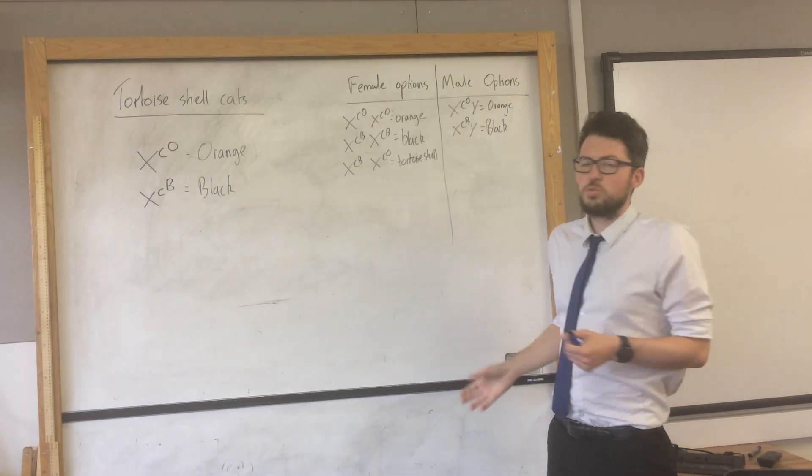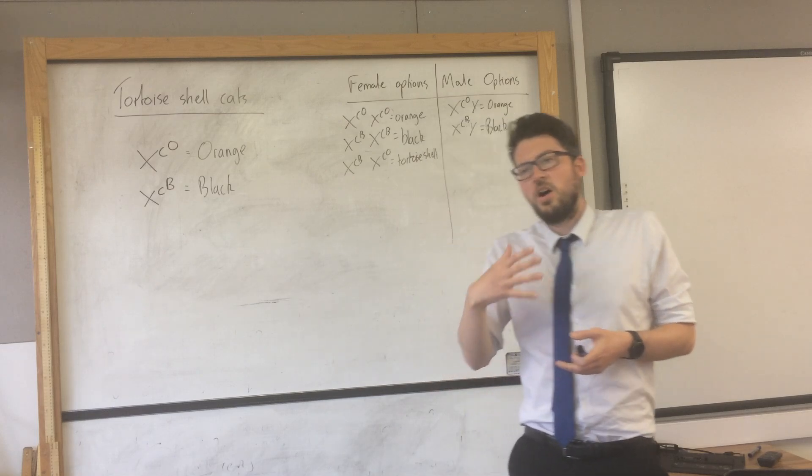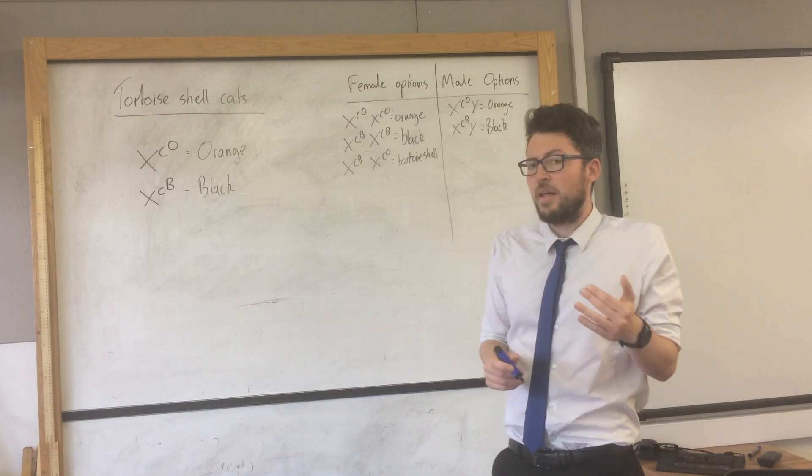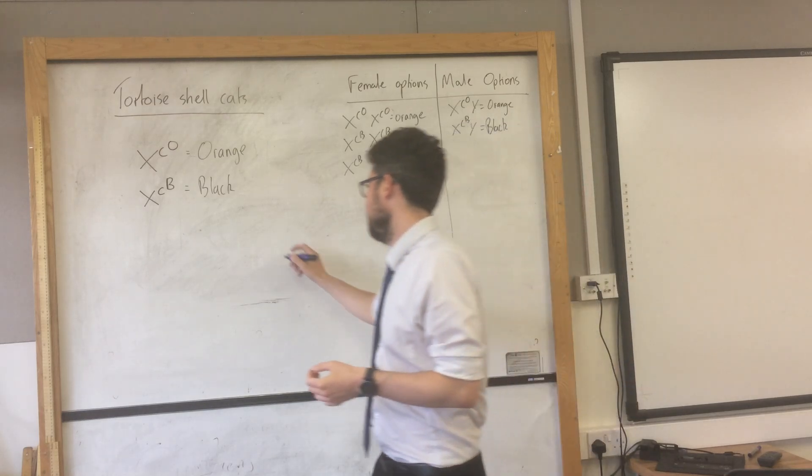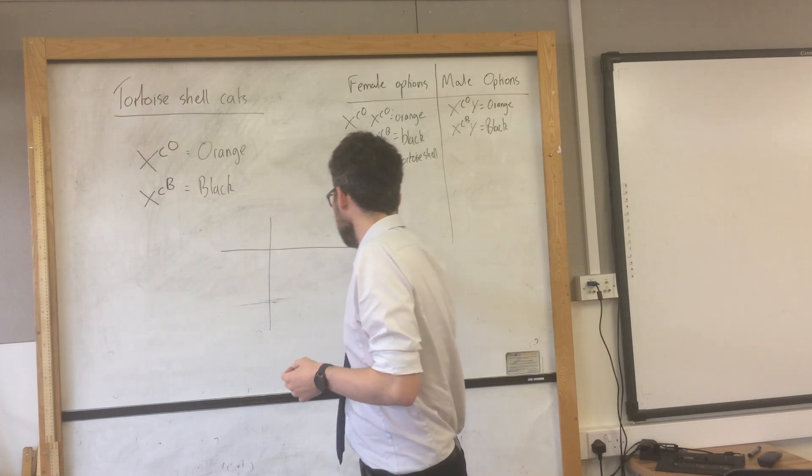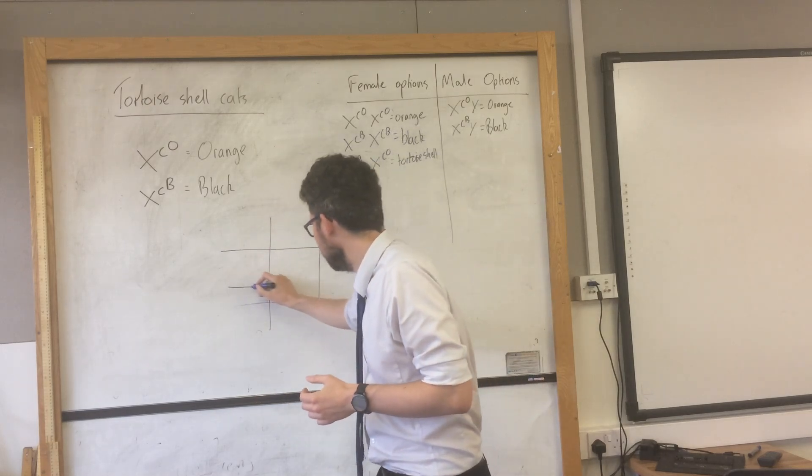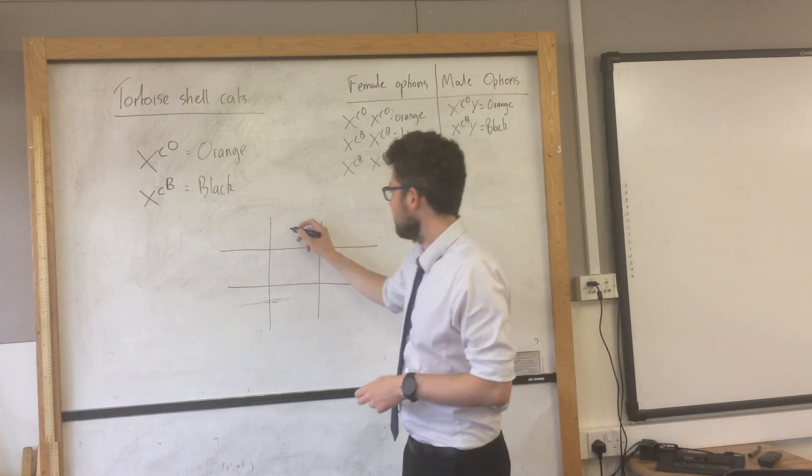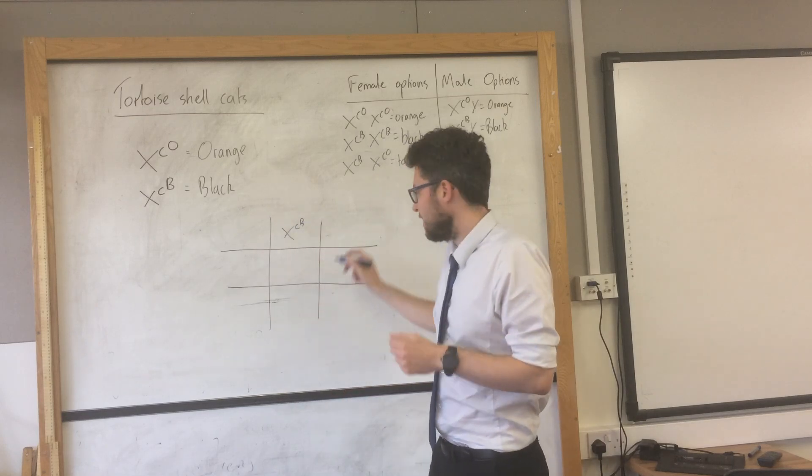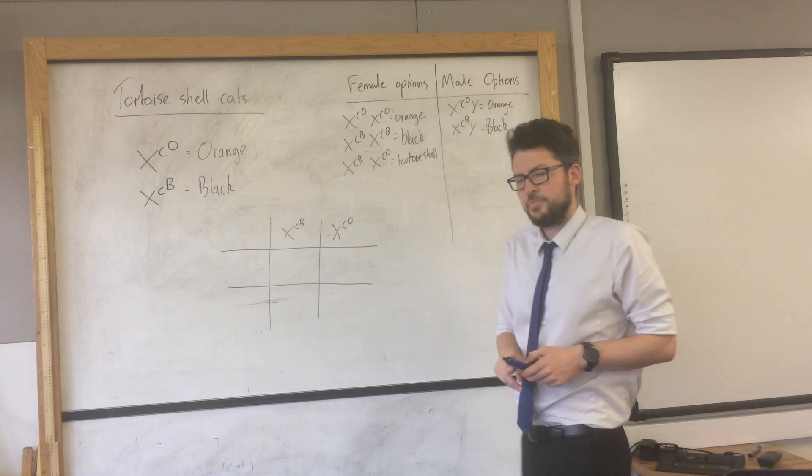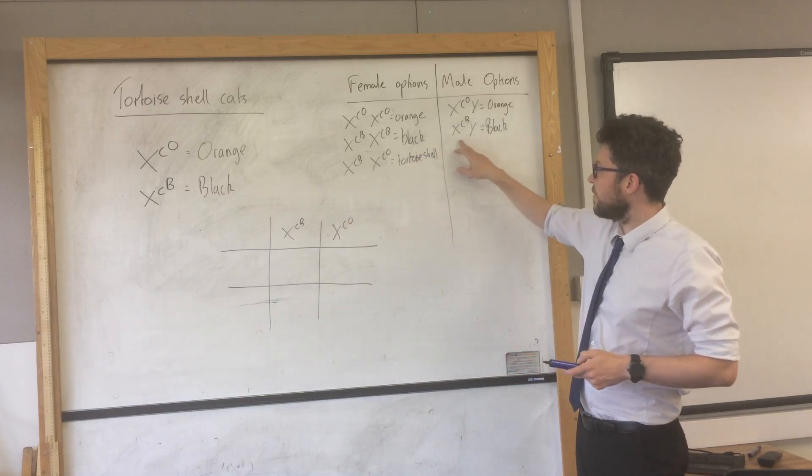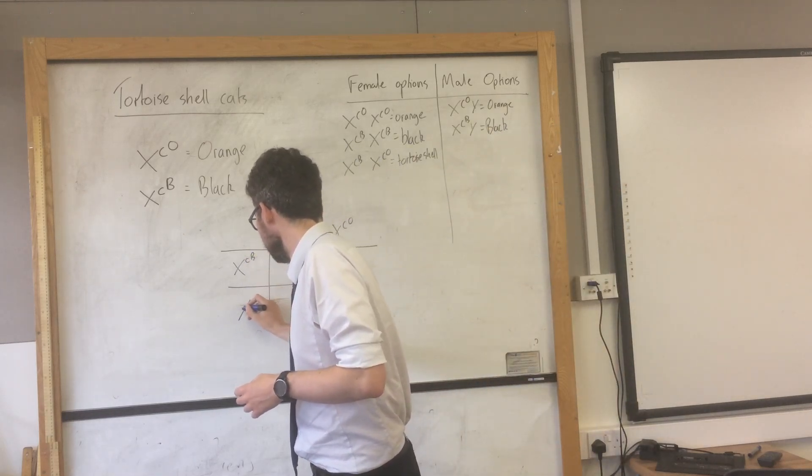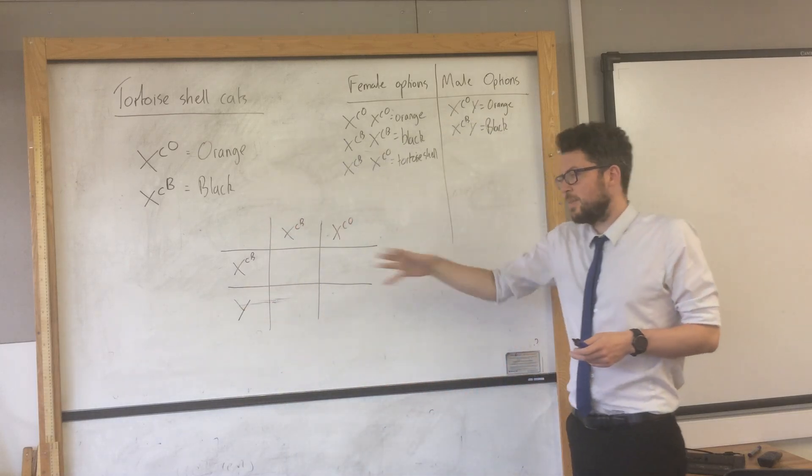So let's just do a genetic cross diagram to show what the possible combinations of a mating is. We'll say we're going to mate a tortoise shell female with a black male and let's see what the options are. So a tortoise shell female, we know that her genotype must be this, XC-B and XC-O. A black male, we know that they must be XC-B, Y.